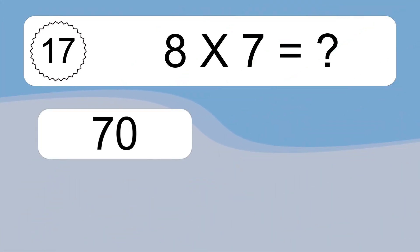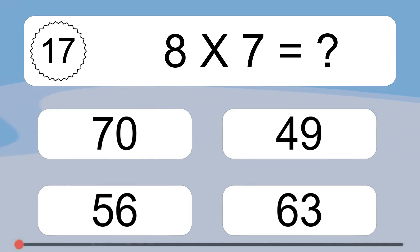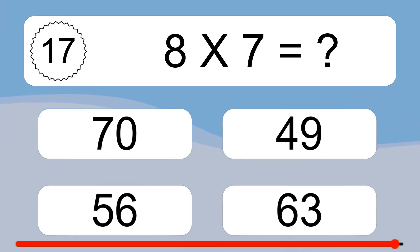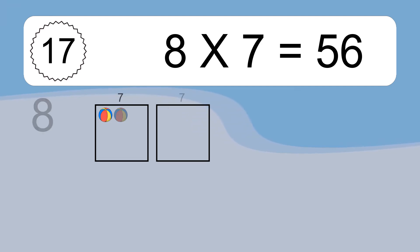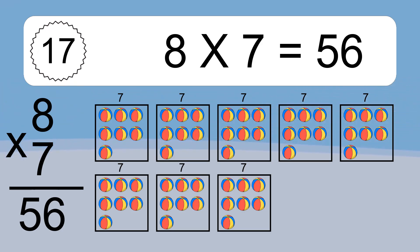8 times 7 equals what? 8 times 7 equals 56. We have 8 boxes, and each box has 7 colorful balls inside. If you count all the balls in all the boxes together, you will have 8 times 7 balls. This equals 56 balls.